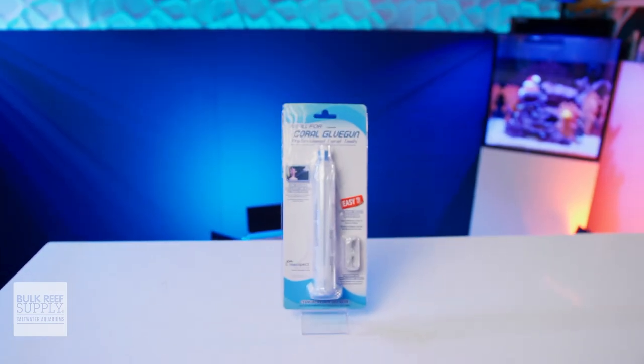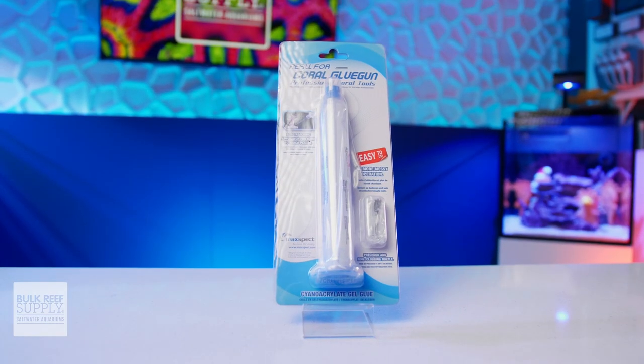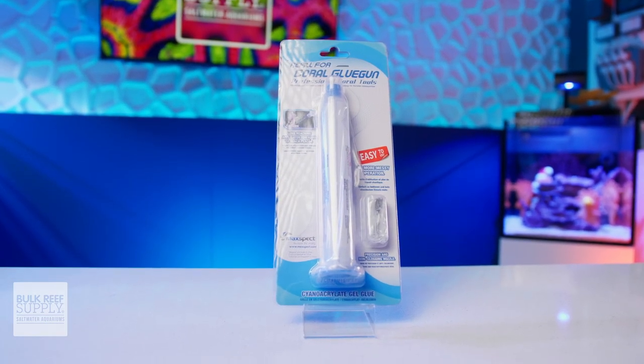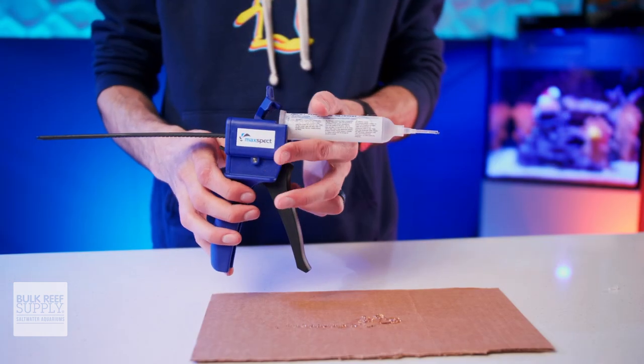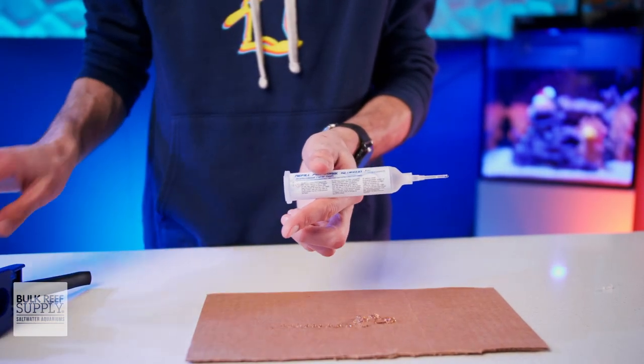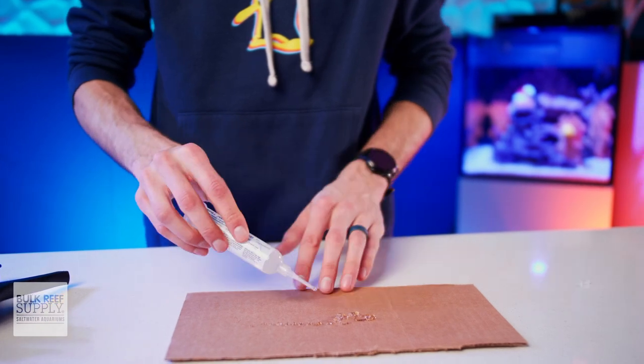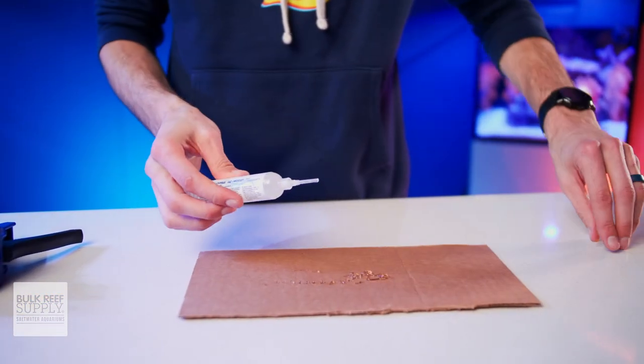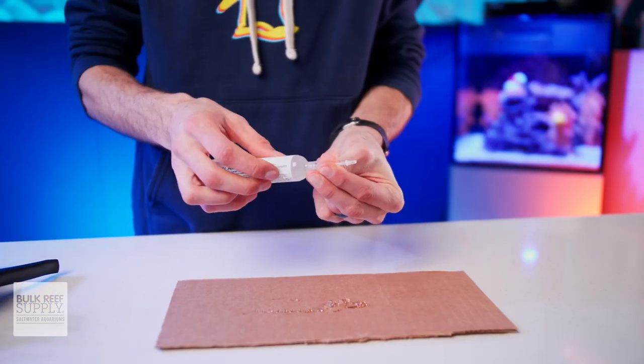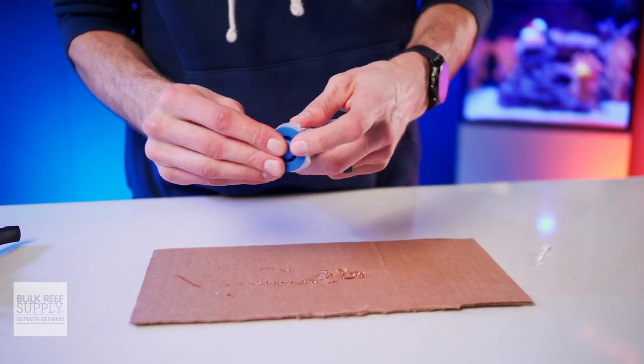Also, don't worry too much about saving the tips. Every new tube of glue that you get will come with fresh tips as well. And lastly, when you're all done your gluing session, don't forget to cap the plastic tip, remove the glue from the gun, and place the back cap back on the glue tube to make sure that it stays fresh for your next gluing session.